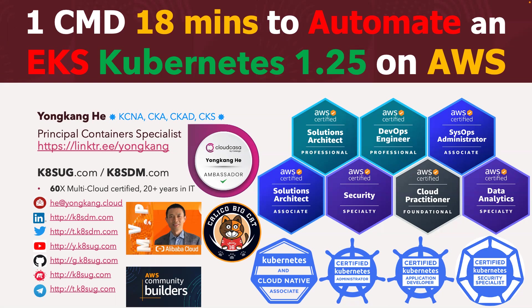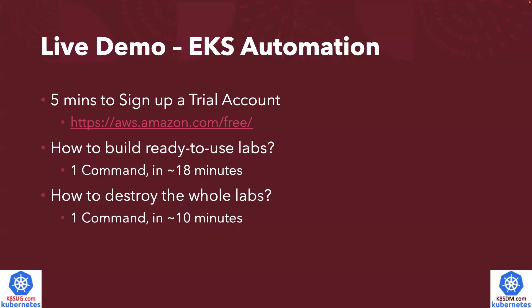Today's topic: how to run just one command in 18 minutes to automate an EKS 1.25 Kubernetes cluster on AWS. I will give you a live demo to show you how to create an EKS cluster by automation, and then how to destroy the whole environment with just another command.